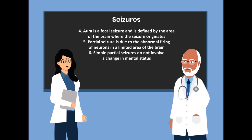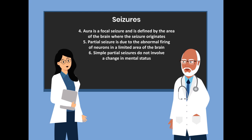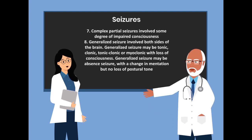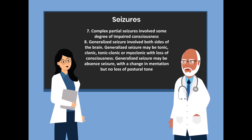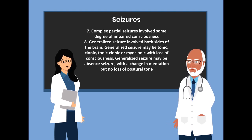The fifth definition is partial seizure — due to the abnormal firing of neurons in a limited area of the brain. The sixth is simple partial seizures, which do not involve a change in mental status. The seventh is complex partial seizures, which involve some degree of impaired consciousness and a larger area of brain involvement. The eighth is generalized seizures, which involve both sides of the brain.